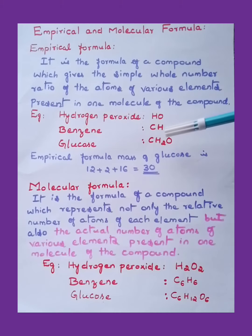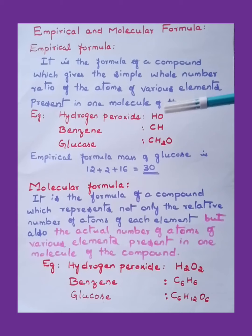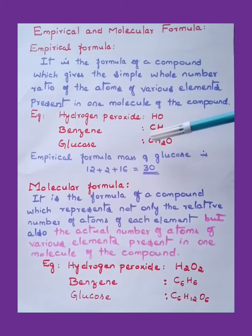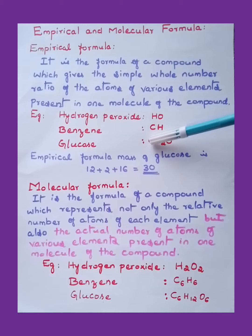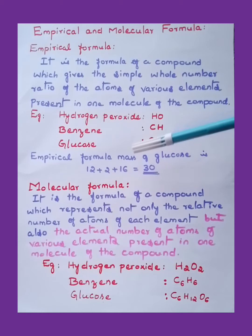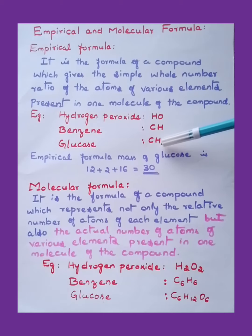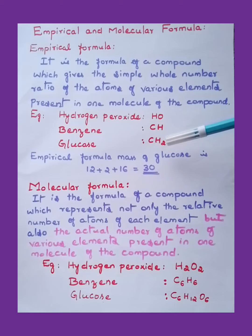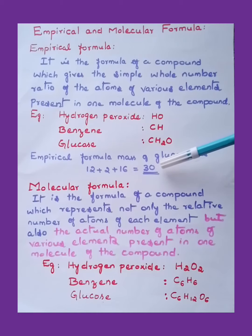For glucose, the molecular formula is C₆H₁₂O₆, but the empirical formula is the simplest ratio: CH₂O. Empirical formula mass: C = 12 × 1 = 12, H = 2 × 1 = 2, O = 1 × 16 = 16. Adding up: 12 + 2 + 16 = 30. So the empirical formula mass of glucose is 30.